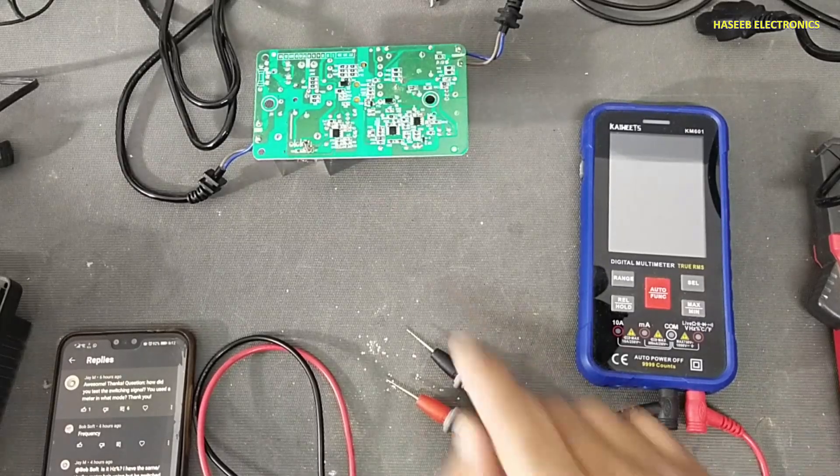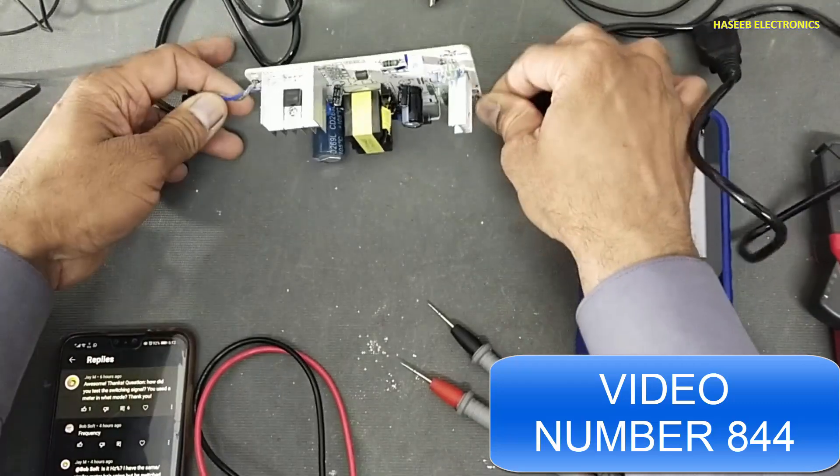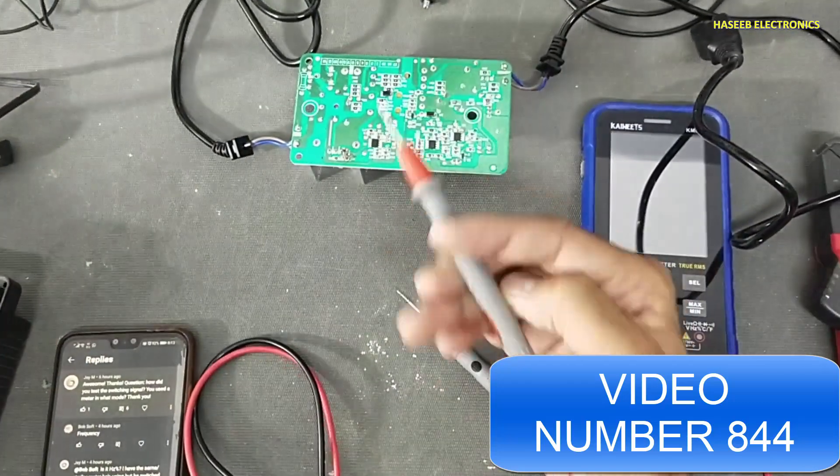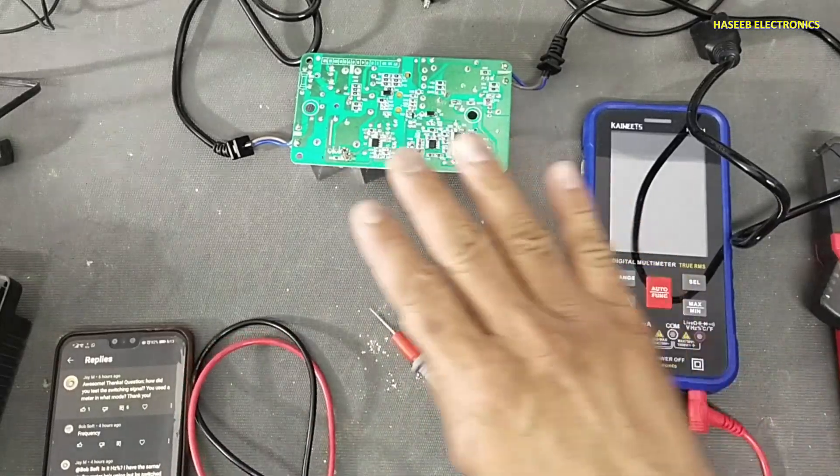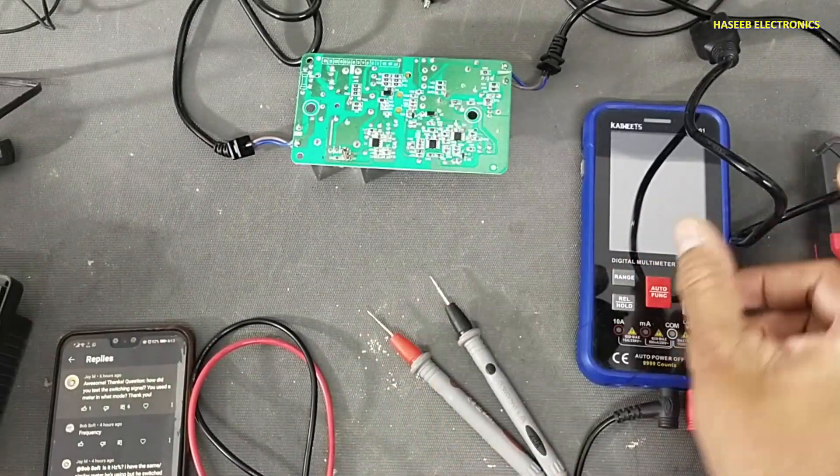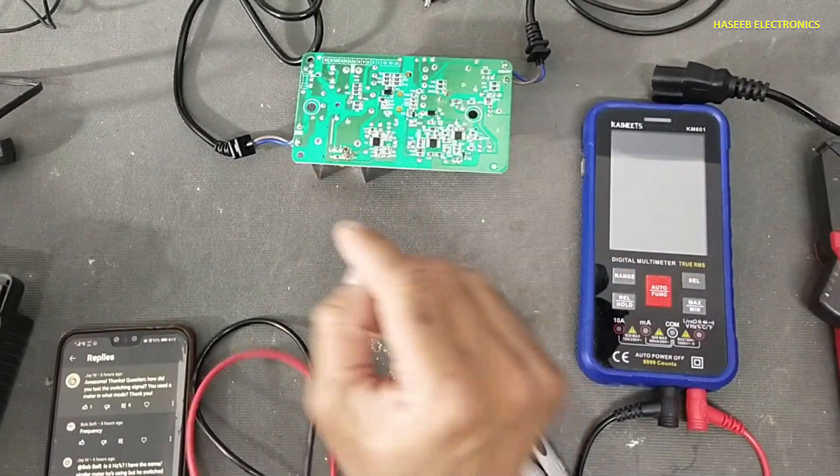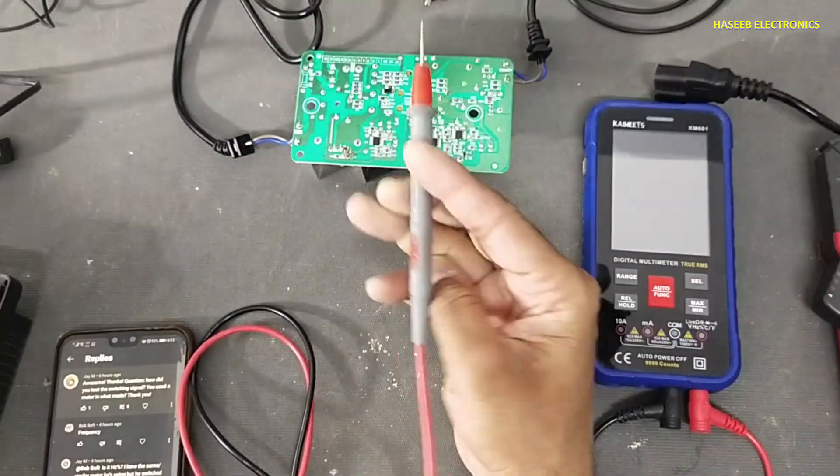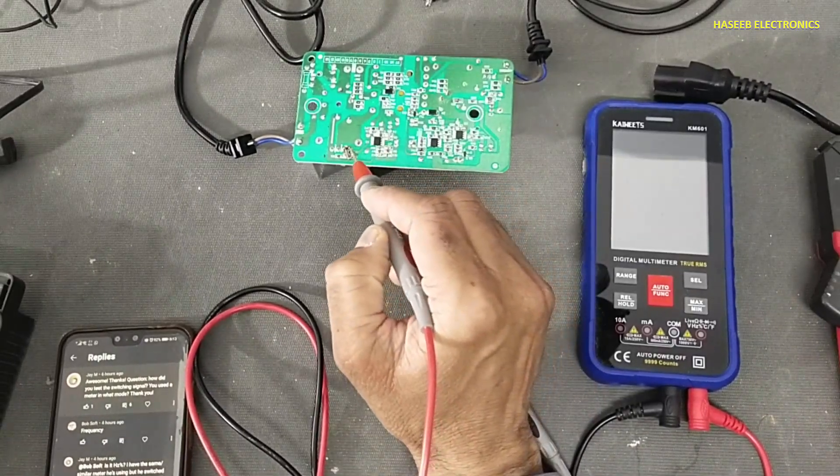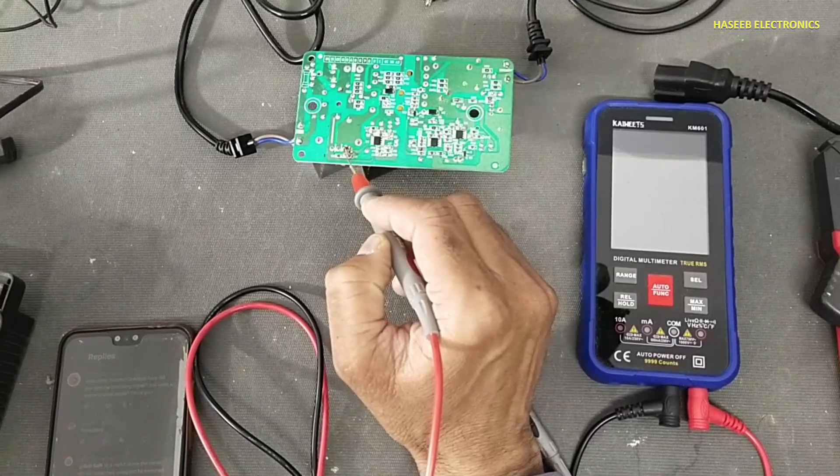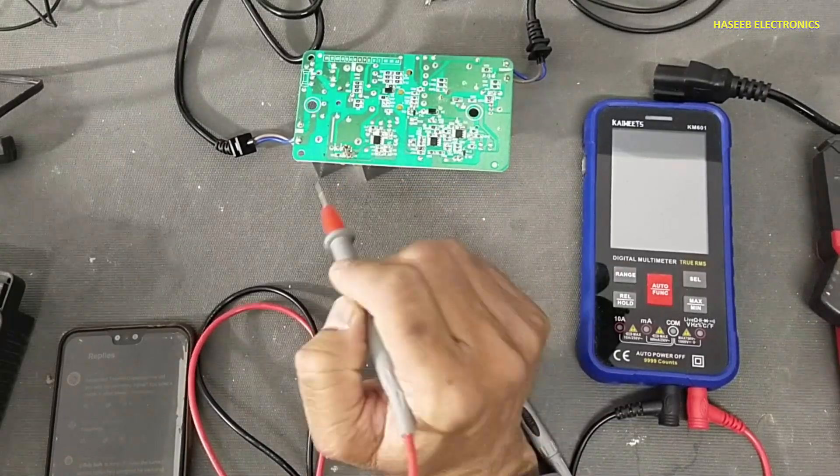Welcome back to my channel. I repaired this e-bike charger in my last video and found this resistor and diode damaged while repairing. I measured the frequency here on this gate because this IC was switching, and these two components were bad so they were not passing the drive signal to the gate.